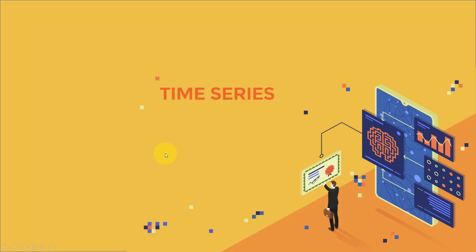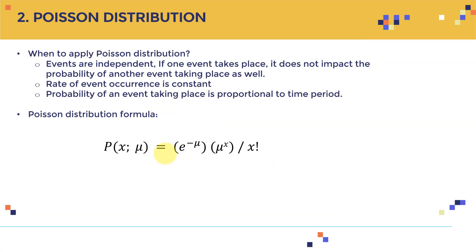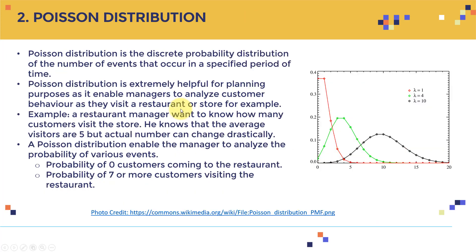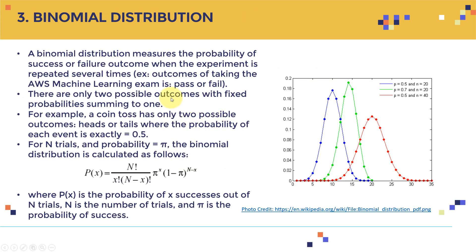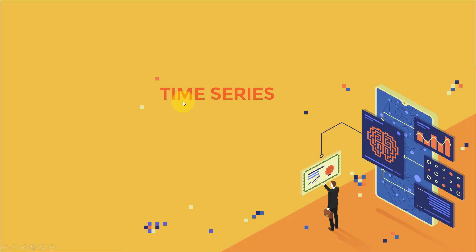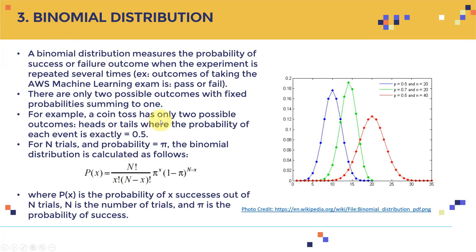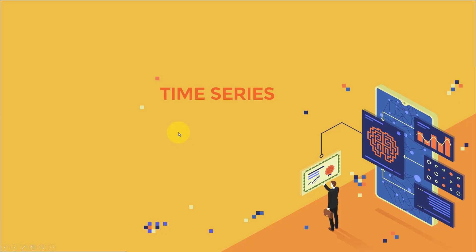That concludes the distributions section. To recap: we covered the normal distribution, the Poisson distribution, the binomial distribution, and the Bernoulli distribution — which is a special case of binomial. I hope you enjoyed it. Please enjoy the AWS machine learning certification course and I'll see you in the next lecture.